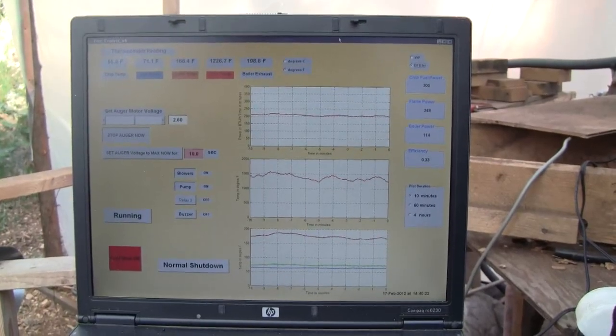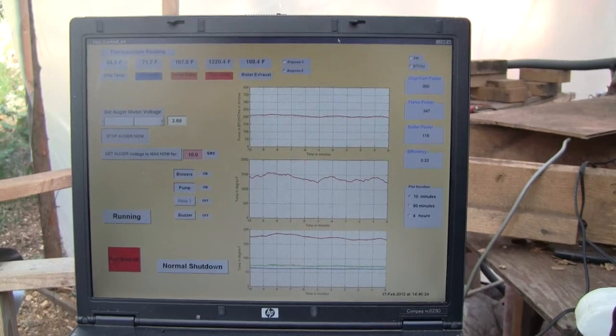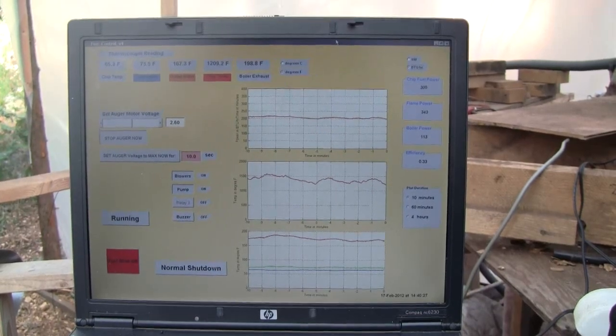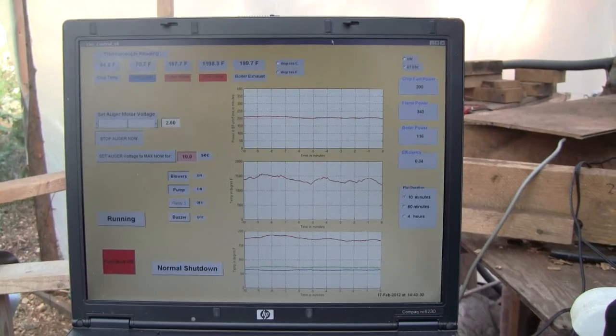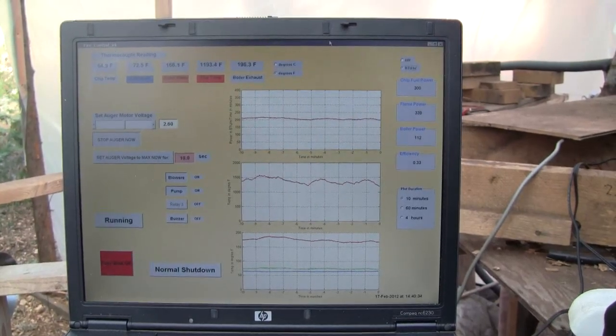Inlet water, that thermocouple is bad, the inlet water is really warmer than that so that needs to get fixed. Outlet water is reading about correct and flutemp is reading correct as far as we know as is boiler exhaust.